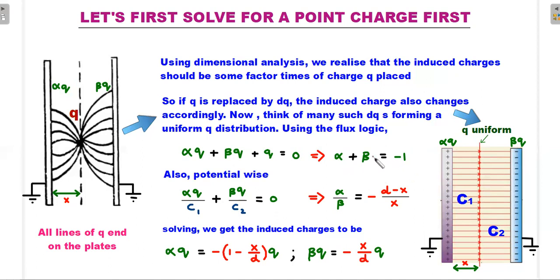Also, potential-wise, since these two plates are grounded, you start from here, calculate the potential difference from the x gap and potential difference for the d minus x gap, which is nothing but writing alpha times q divided by capacitance C1 plus beta times q divided by capacitance C2. The sum of those two potential differences should be zero because there is no potential difference between the two grounded plates. C1 is proportional to epsilon naught area of the plates divided by x—that means C1 is inversely proportional to x—and C2 is inversely proportional to d minus x.